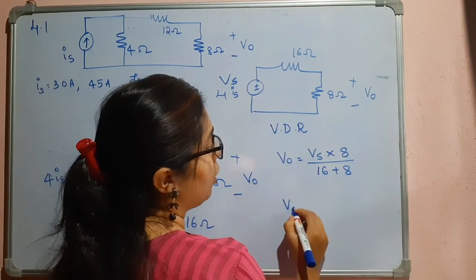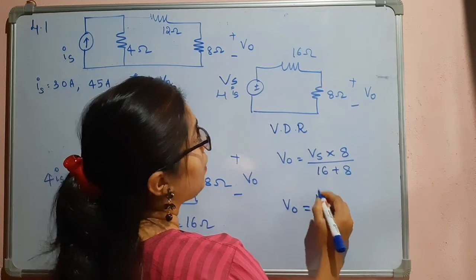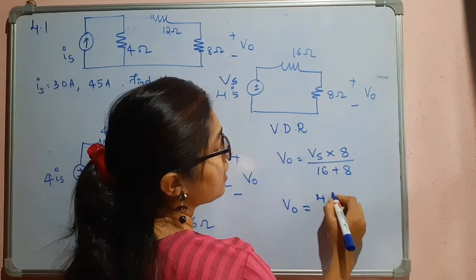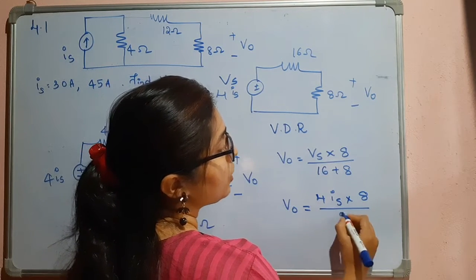Next we have V0 that is equal to Vs, which is nothing but 4IS into 8 divided by 24.